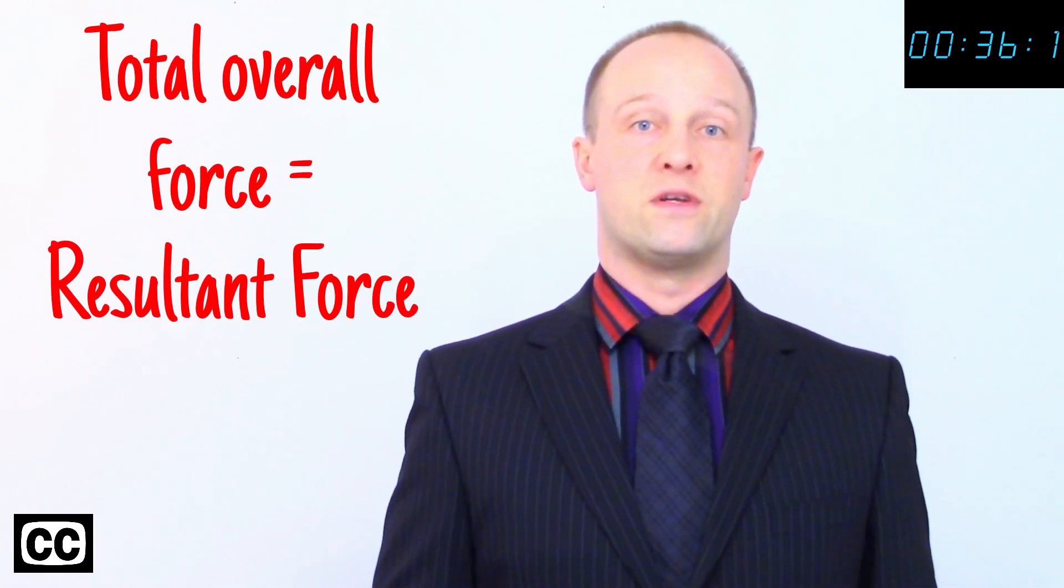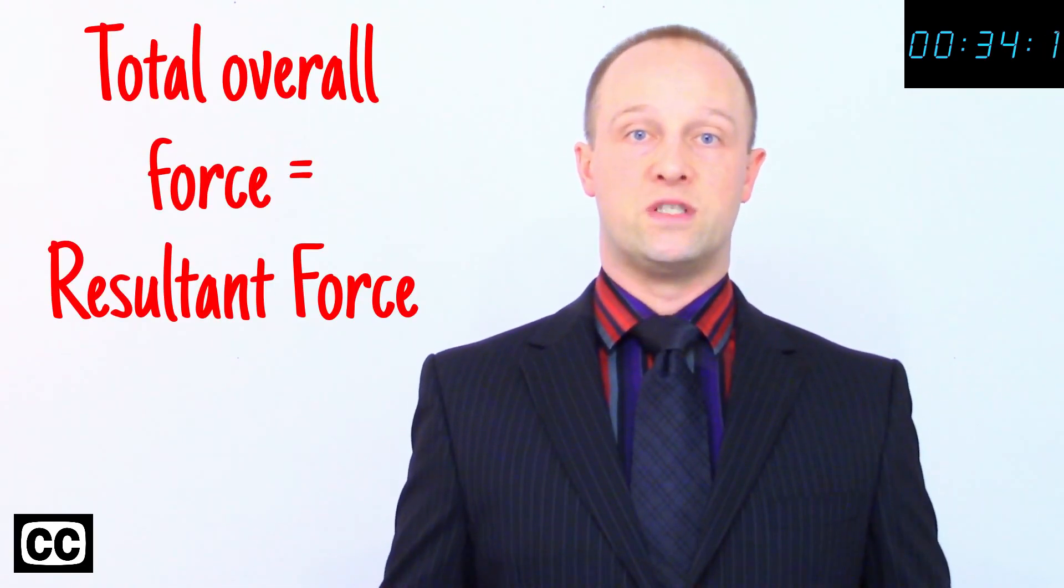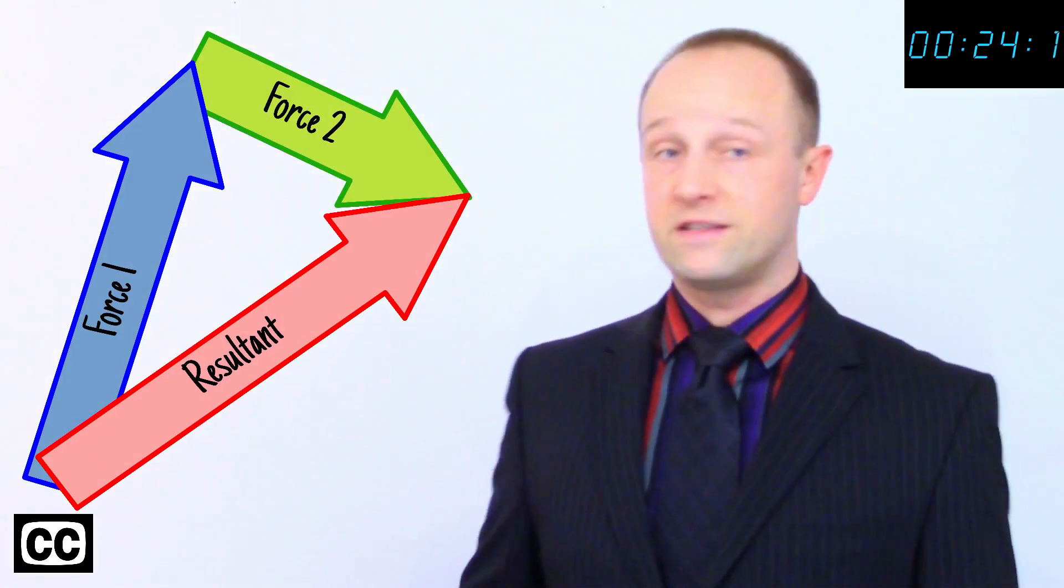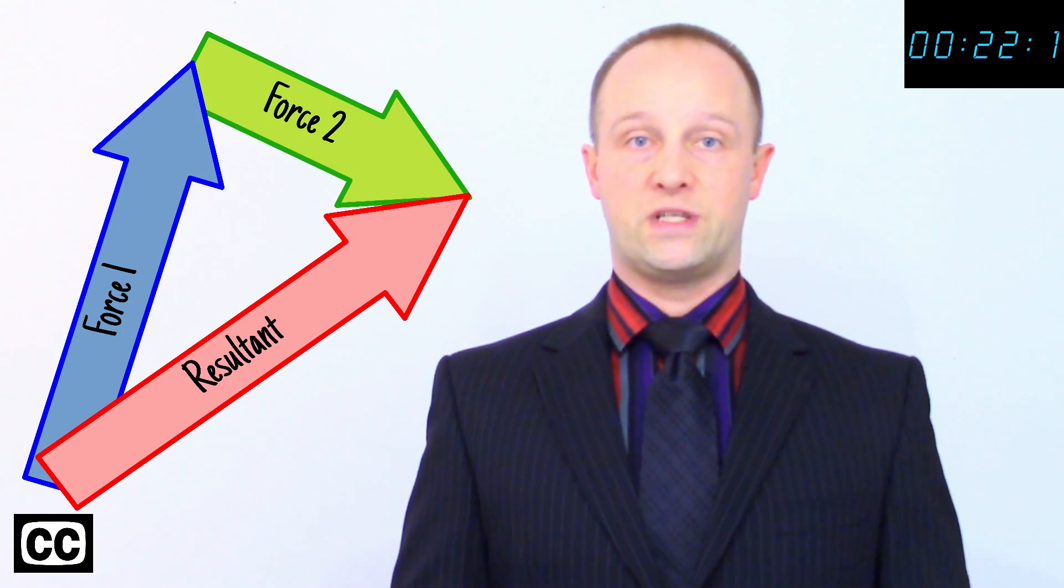If two or more forces act upon a single object, the overall force is called the resultant force. To calculate resultant force in one dimension, we add forces if they're in the same direction and subtract forces in opposite directions. In two or three dimensions, we add the forces end-to-end like this to find the resultant or use trigonometry to calculate it.